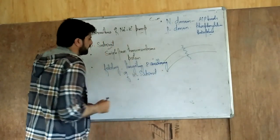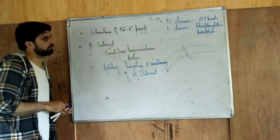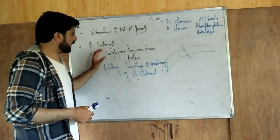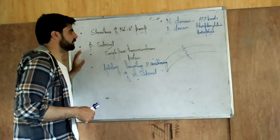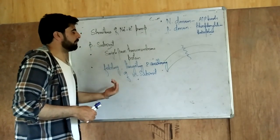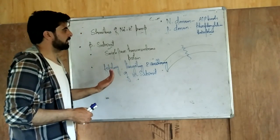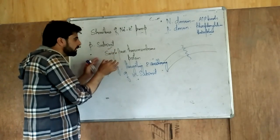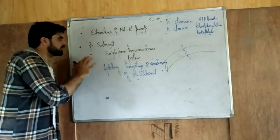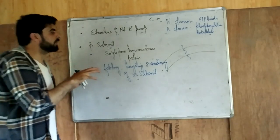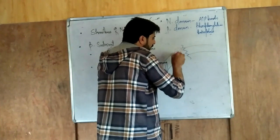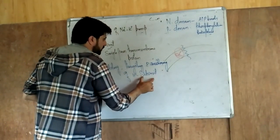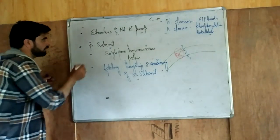When the alpha subunit is formed inside the rough endoplasmic reticulum — since it follows the secretory pathway for membrane proteins — it moves through the Golgi apparatus. From the Golgi, it is transported via vesicles into the plasma membrane. The beta subunit helps in folding this protein, targeting it to the correct location, and fixing the alpha protein within the plasma membrane.